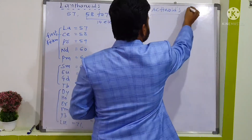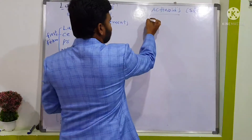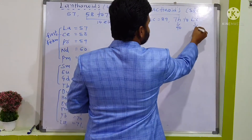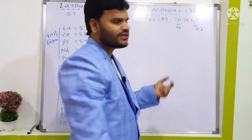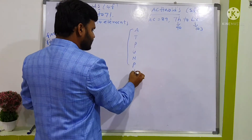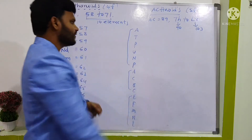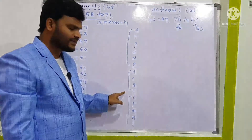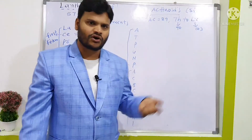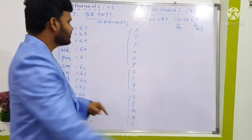Now for actinoids — the 5F series — the series starts after actinium. Actinium has atomic number 89; thorium is 90 and lawrencium is 103, so 90 to 103 gives 14 elements. To remember the actinoids, use the mnemonic: ATP UNP ACBC E FM N L.